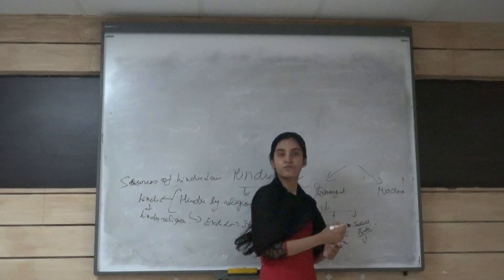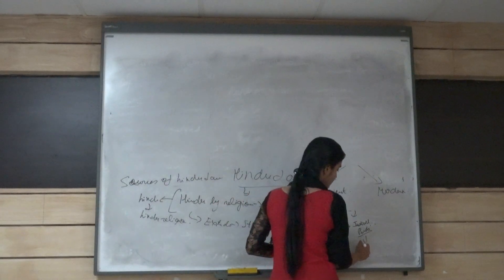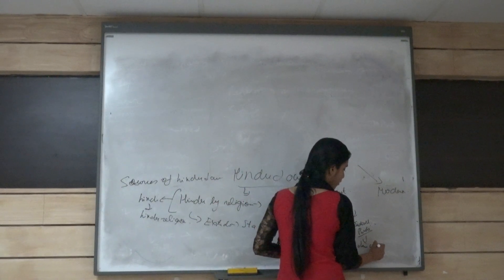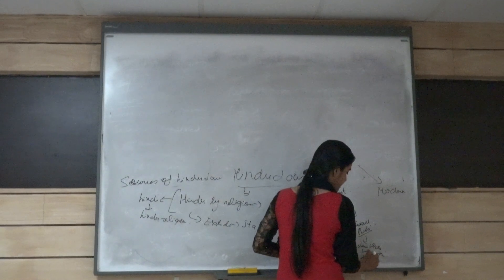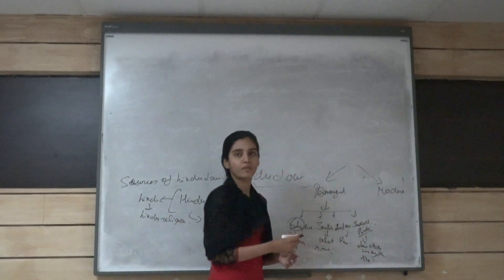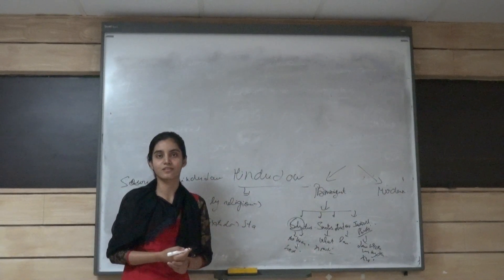And the last one is the judicial precedence. So coming back to the judicial precedence means the law which was given by the kings. So in the another topic we will cover the modern sources. Thank you.